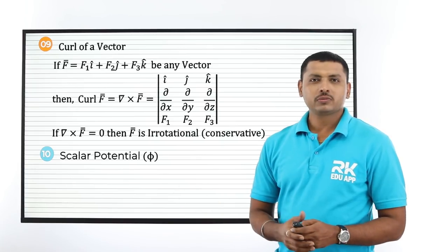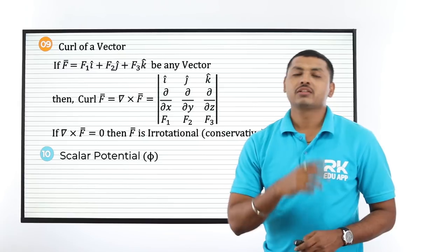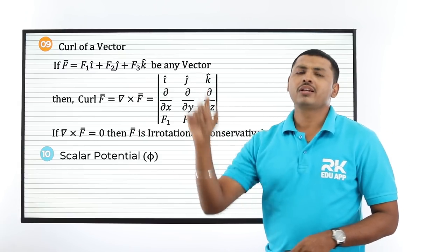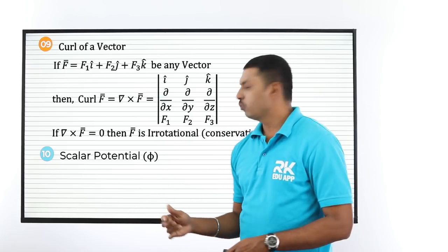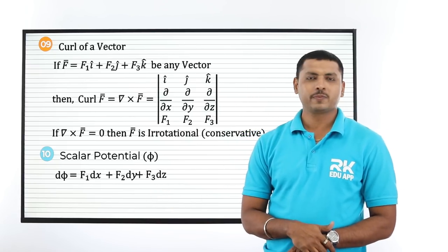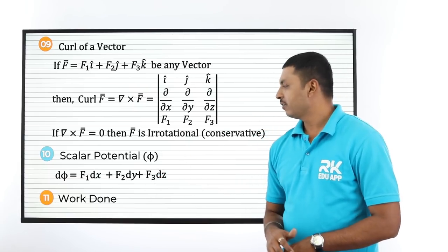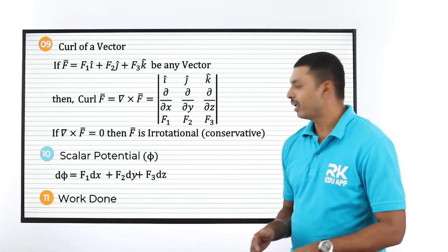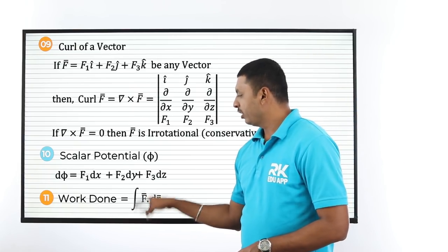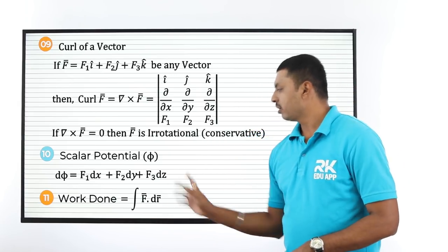Scalar potential: given a vector, to find the scalar from it, the scalar potential formula is dφ = F₁dx + F₂dy + F₃dz. Related to this is the work done formula: work done = ∫ F̄ · dr̄, with limits a to b as given in the question.